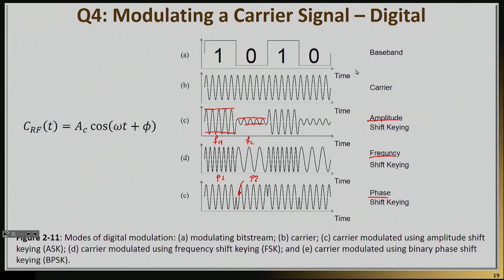Just as one example, amplitude shift keying — also called ASK — is a great modulation scheme in the sense that it's very simple to implement. Even people who make receivers for the first time in their lives can actually make this work.